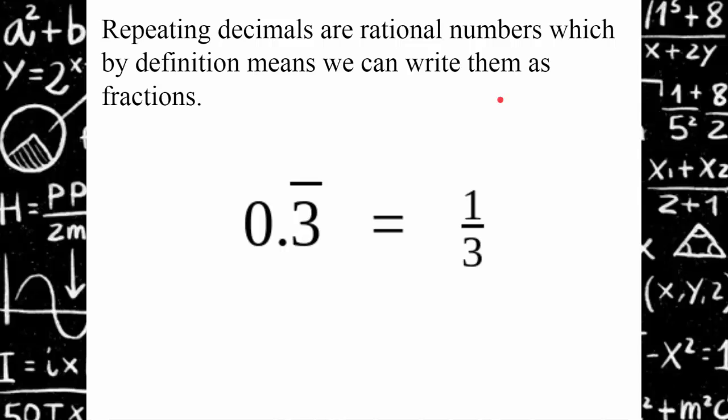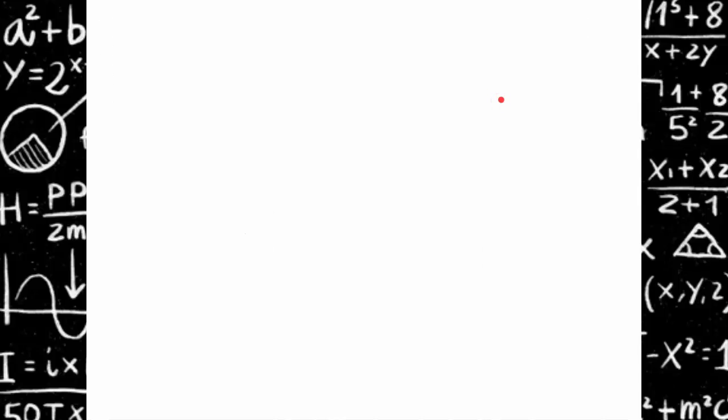Today I'm going to show you how to algebraically turn any repeating decimal into a fraction. It's almost like a magic trick. So first step in this process is to let x equal the repeating decimal that you're trying to convert to a fraction. So I'm going to let x equal 0.3 repeating.